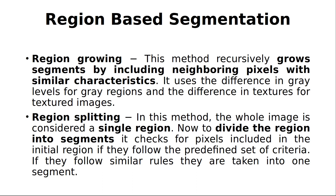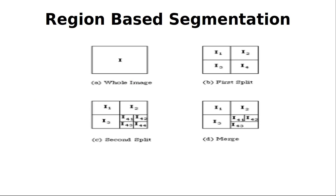Region-splitting means dividing the region into segments. It checks the pixels included in the initial region if they follow a predefined set of criteria. If it follows certain rules, it will be split into two or more parts. This is the general concept about region-based segmentation: the whole image is split by a particular rule into four segments. The fourth segment is further split into four parts, and then I-4-3 and I-4-4 are combined — merging two pixels to create one. This is the concept for region-based segmentation.